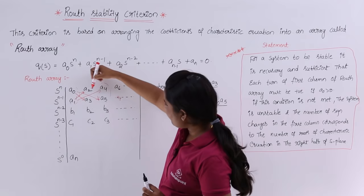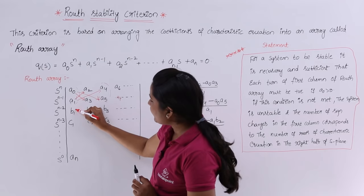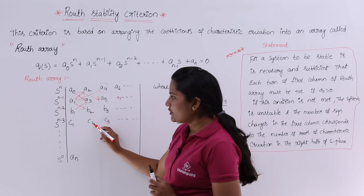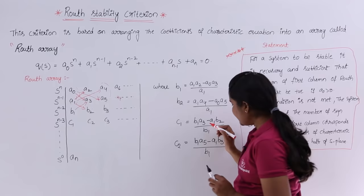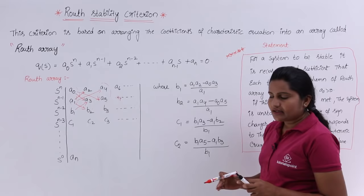Similarly, to get c₁ you take: (b₁·a₃ − a₁·b₂) / b₁. To get c₂, you take: (b₁·a₅ − a₁·b₃) / b₁. First two rows can be taken from the characteristic equation, and the next rows are calculated from the previous rows using this cross-multiplication pattern.